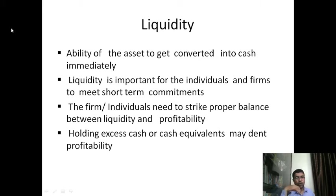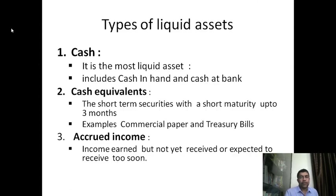Holding excess cash or cash equivalents may reduce profitability, because cash in itself is not a productive asset, so you have to be careful. Types of liquid assets: Cash is the most liquid asset and includes cash in hand and cash at bank. Cash equivalents are short-term securities with maturity up to three months.